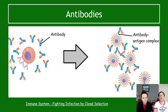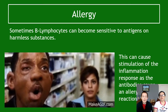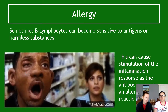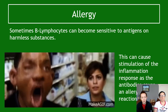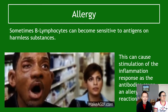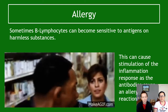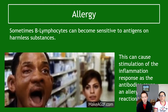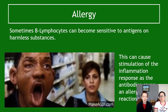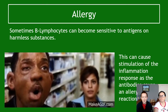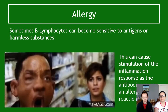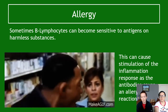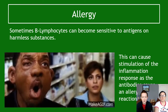Sometimes B lymphocytes don't work properly, which causes allergies. B lymphocytes can become very sensitive to certain antigens on harmless substances, causing an allergic reaction. This is actually a stimulation of the inflammation response — remember histamine in response to allergic reactions, and how you might take an antihistamine. The antibodies themselves can cause the allergic reaction.